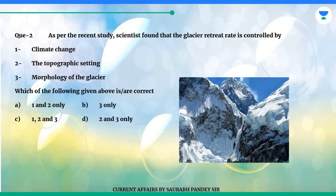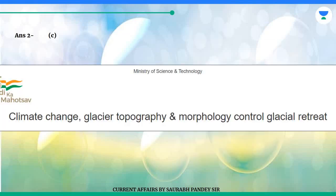Which of the following given above is correct? A. One and two only. B. Three only. C. One, two and three. D. Two and three only. The answer is C.